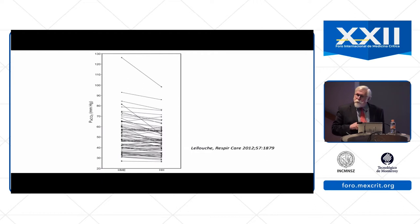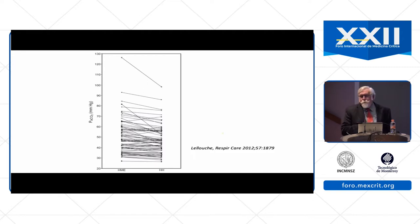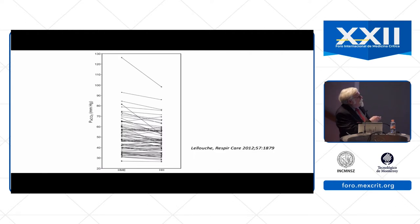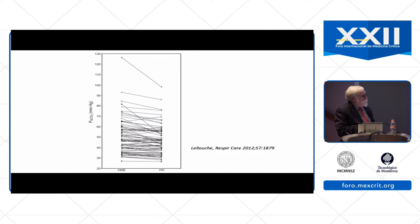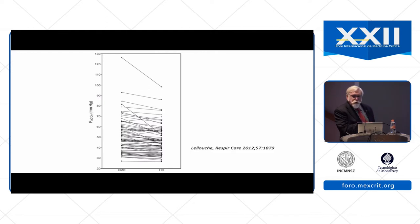This is another paper by the same group that looked at the effect of a heat and moisture exchanger versus a heated humidifier on arterial PCO2 in patients with COPD exacerbation. In many patients there was no difference in PCO2. However, in some patients there were important decreases in PCO2 when going from a heat and moisture exchanger to a heated humidifier, with significant reductions in PCO2. This relates to the fact that with the heat and moisture exchanger, there is more dead space in the circuit, and that increase in dead space can result in a higher PCO2.